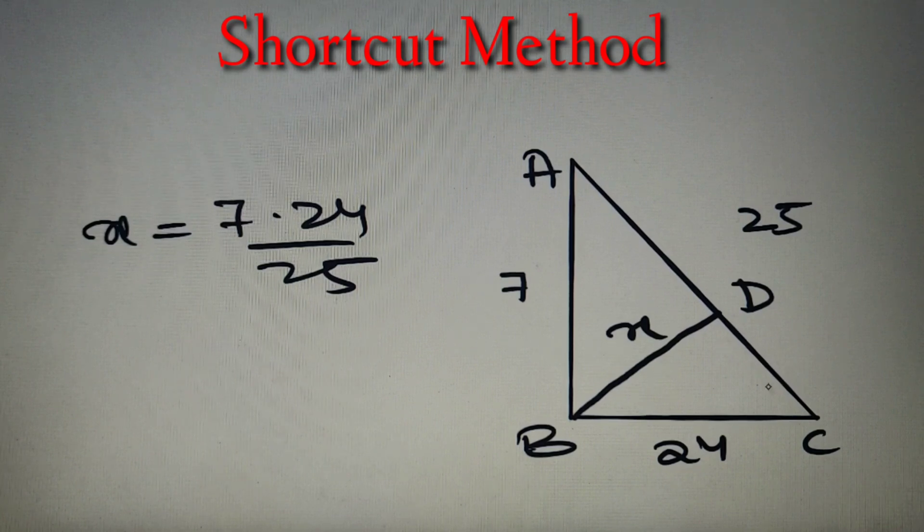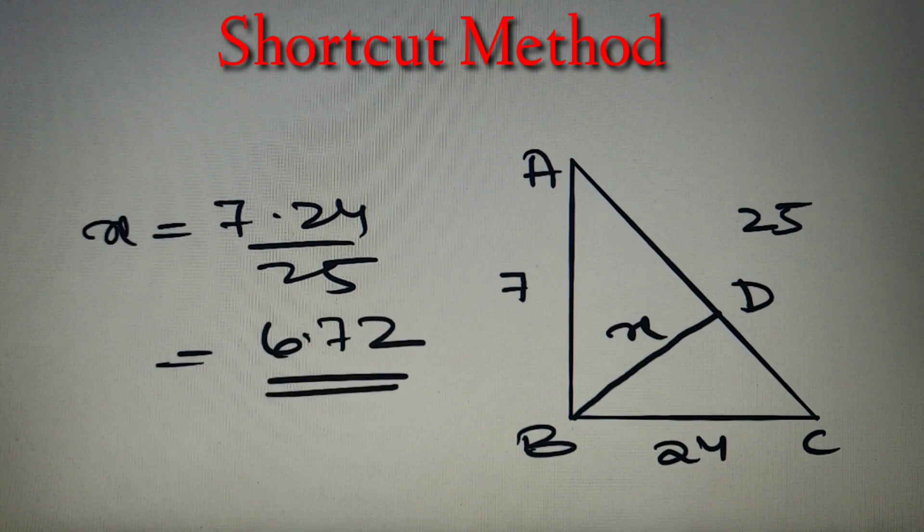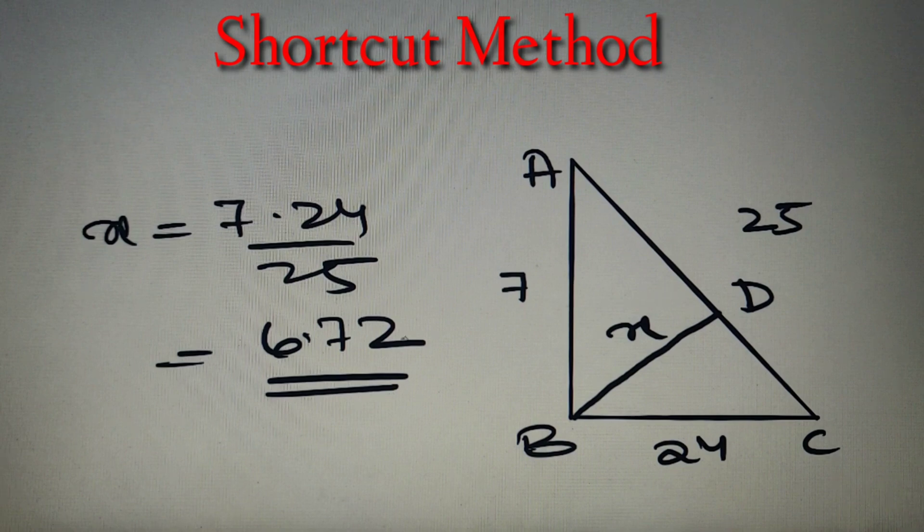According to the shortcut method, the length of this perpendicular equals the product of the perpendicular and base of the original triangle divided by the hypotenuse of the original triangle. This value will again come as 6.72. In competitive exams or entrance exams, we should always use the shortcut method to directly find the answer.